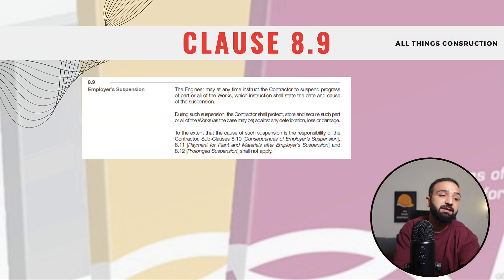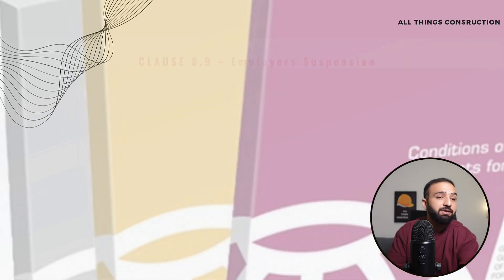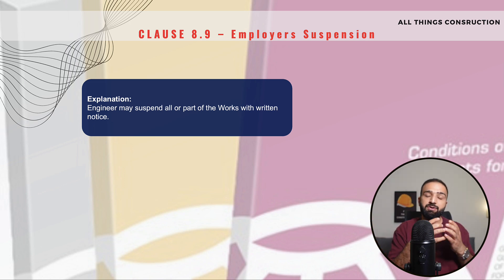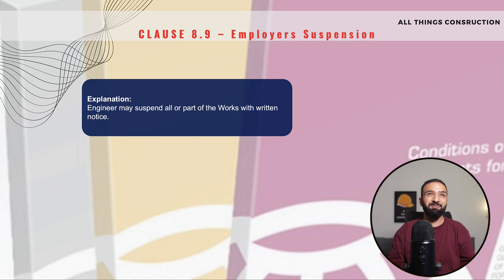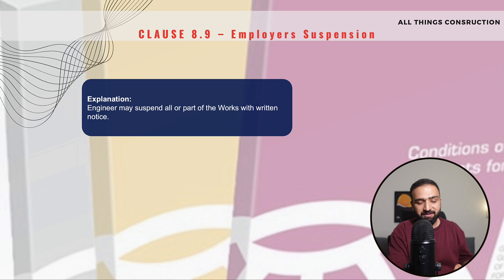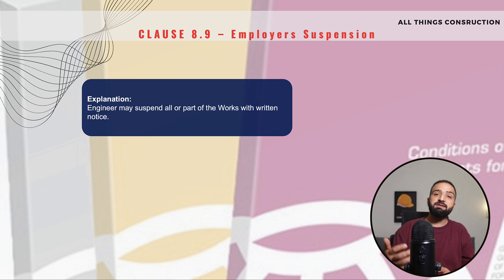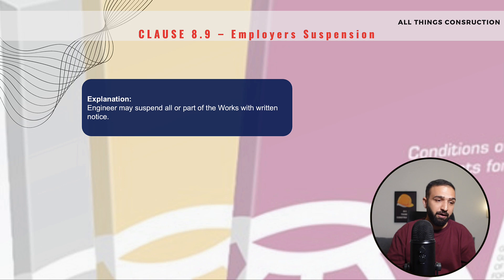Clause 8.9 is Employer's Suspension. What this clause basically means is that the engineer, upon the employer's direction, can instruct us contractors to suspend part of the works or in some cases all of the works. This can happen for various reasons — there can be budget issues where the employer suddenly does not have enough money, or the works undergo a major redesign.